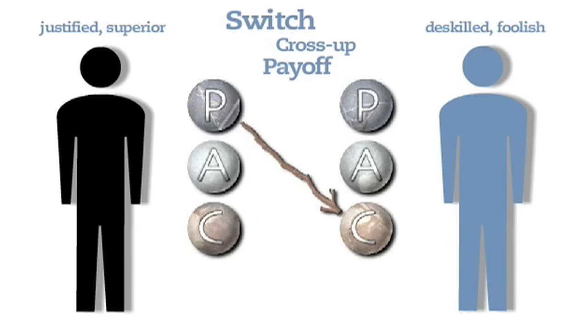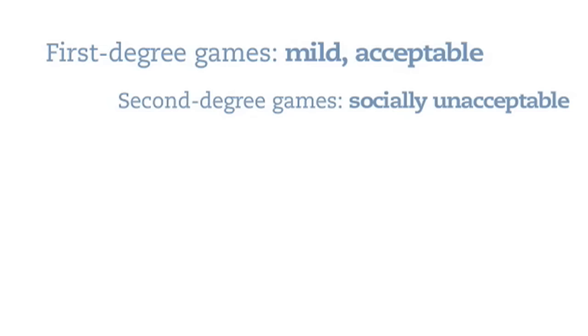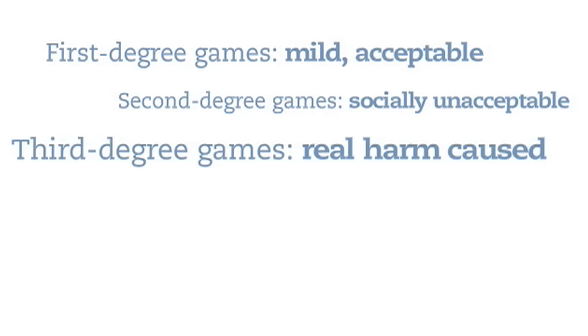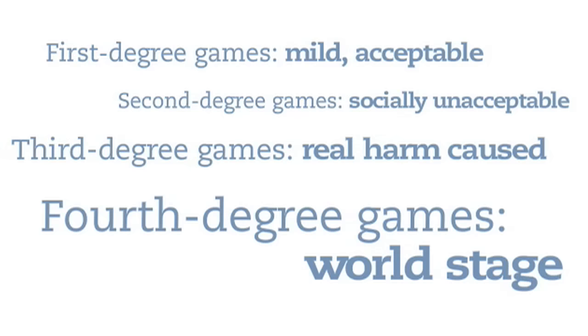Games can be played to different degrees. TA proposes three broad levels. First degree games are the mildest forms, and feel acceptable in the player's social group. Players in second degree games prefer to distance themselves from the game and don't share it with people they know. Third degree games can lead to injury, death and criminal charges. Some suggest there's a fourth degree, played through politics, affecting communities, nations and the planet.